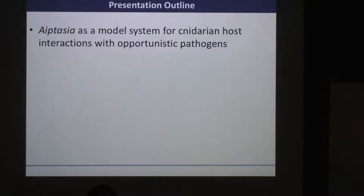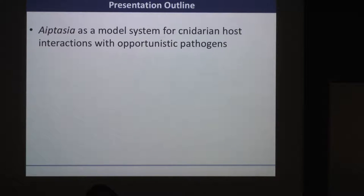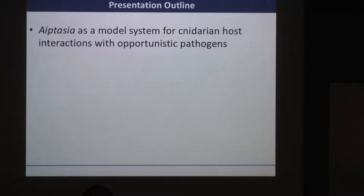Here's a presentation outline. The first story looks at using this small sea anemone, Aptasia, as a model system for cnidarian host interactions with both opportunistic and potentially beneficial bacteria — can we use this as a surrogate model for studying these interactions that we see in coral?